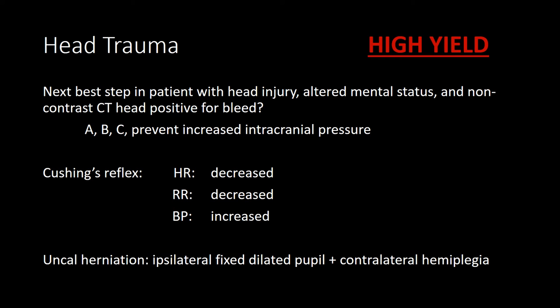Cushing's reflex is a sign of impending herniation — look for decreased heart rate, decreased respirations, and hypertension. If you see a herniation question, it will most likely be uncal herniation, also known as transtentorial herniation, where the temporal lobe or uncus is compressed and moves toward the brain stem. This puts pressure on cranial nerve 3, leading to ipsilateral fixed dilated pupil and contralateral hemiplegia — this entire section is very high yield.